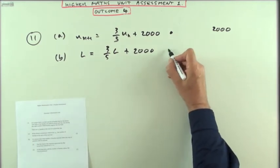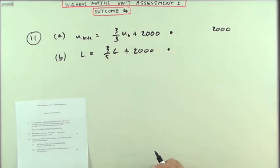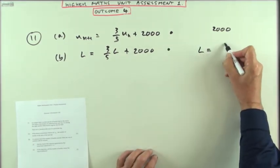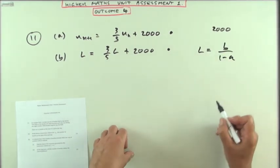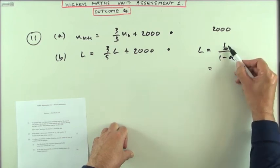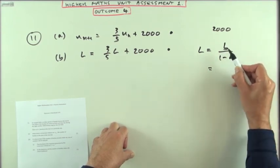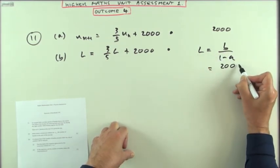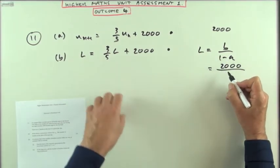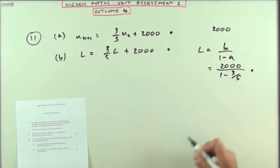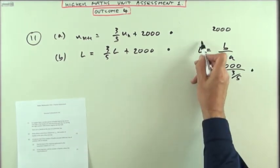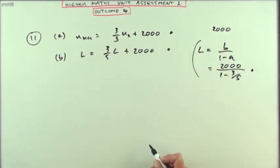So, you could either put that down, that would be a mark, or you could put the formula down, L equals B over one minus A. But that doesn't get any marks. Not until you put the numbers in, because you need to know what they actually stand for. B was the adding number, and A was the multiplying number, three-fifths. That would get you a mark as an alternative to that one. And then it's just a case of evaluate it.